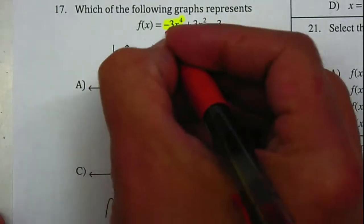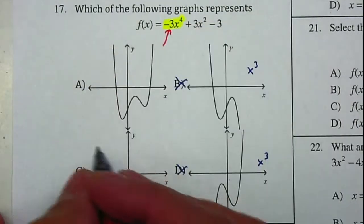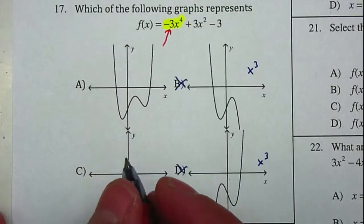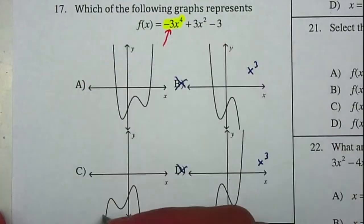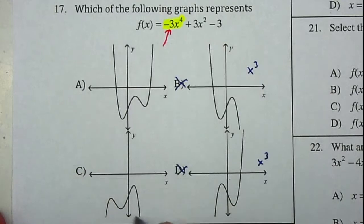Now, this is a negative coefficient, so therefore your graph should end up in the negative side. Let's see. That one's up in the positive. This one ends up in the negative. So therefore your answer is C.